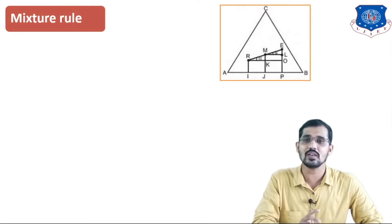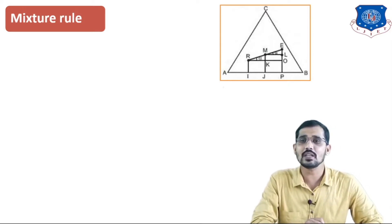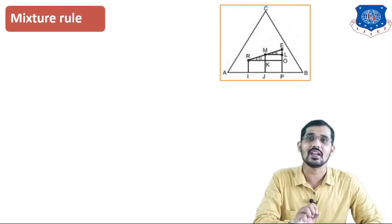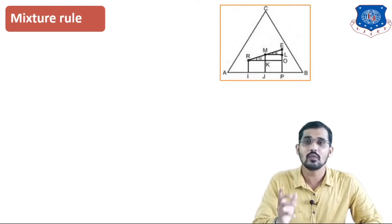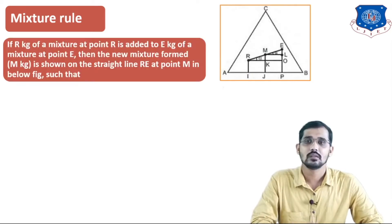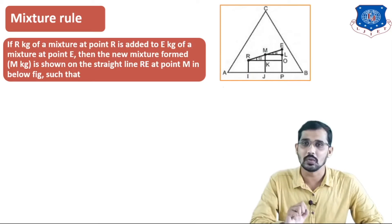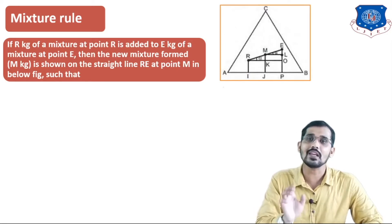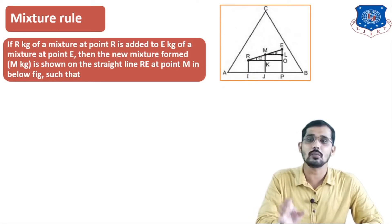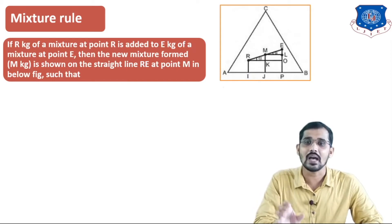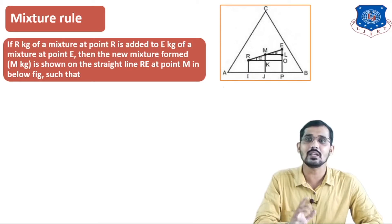There are two phases available: the first one is extract phase, represented by E, and raffinate phase, represented by R. The mixture of R and E is nothing but the mixture of raffinate phase and extract phase. In this lecture, we are going to derive a relation between the extract and raffinate phase and the composition of the solute in each phase. If R kg of the mixture at point R is added to E kg of the mixture at point E, then the new mixture formed is M kg.